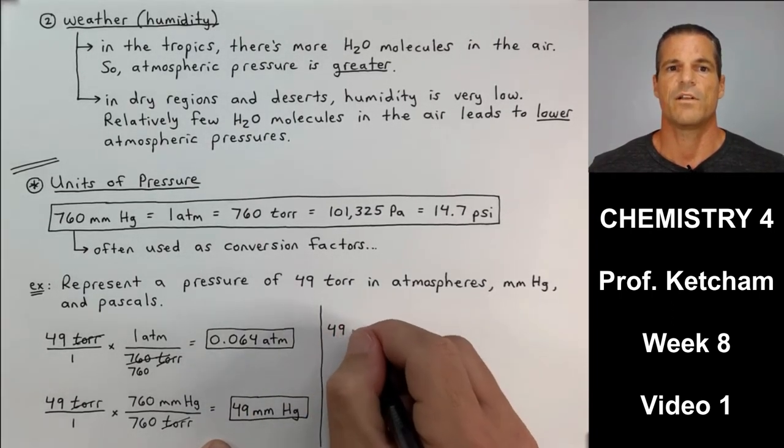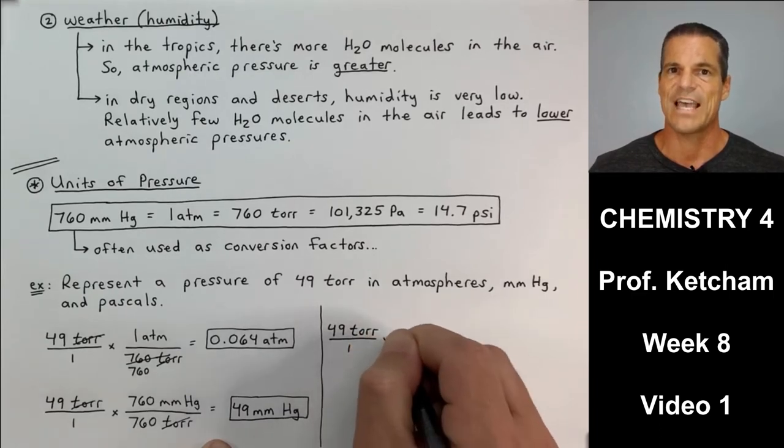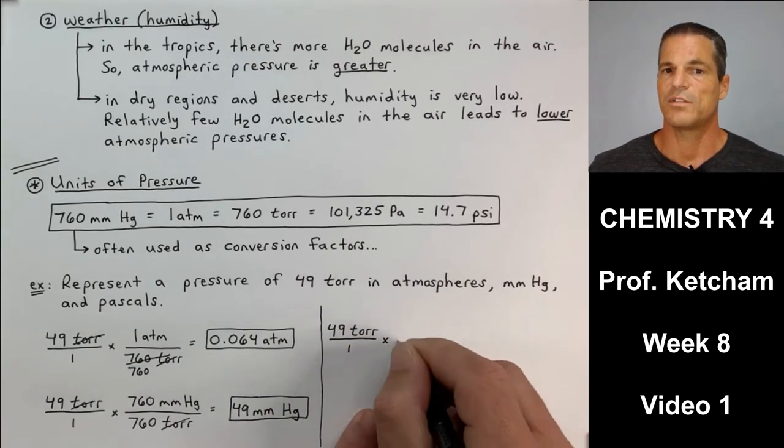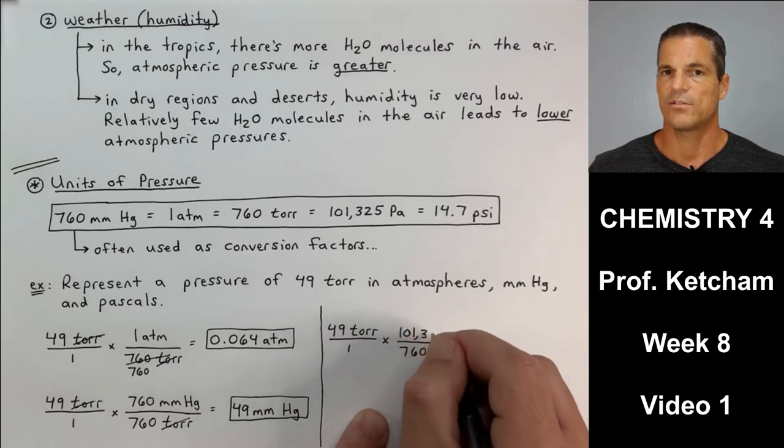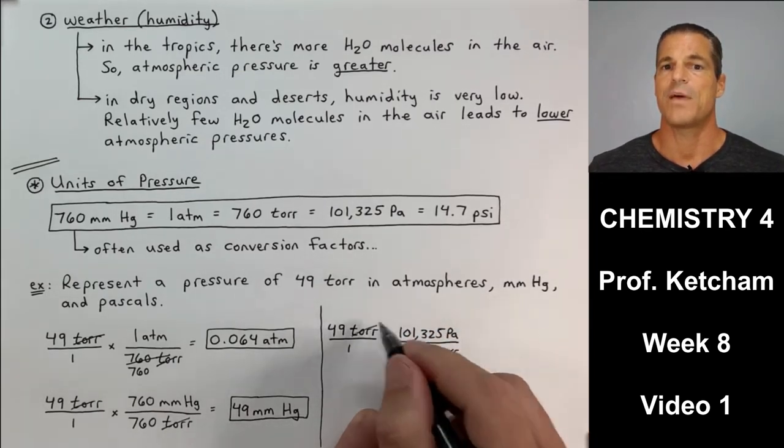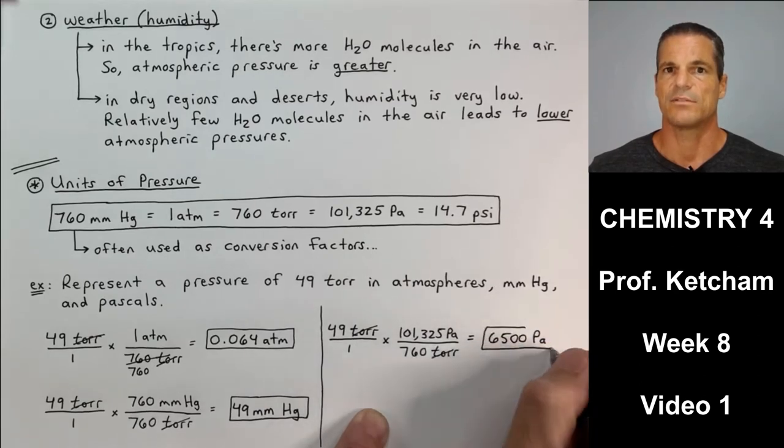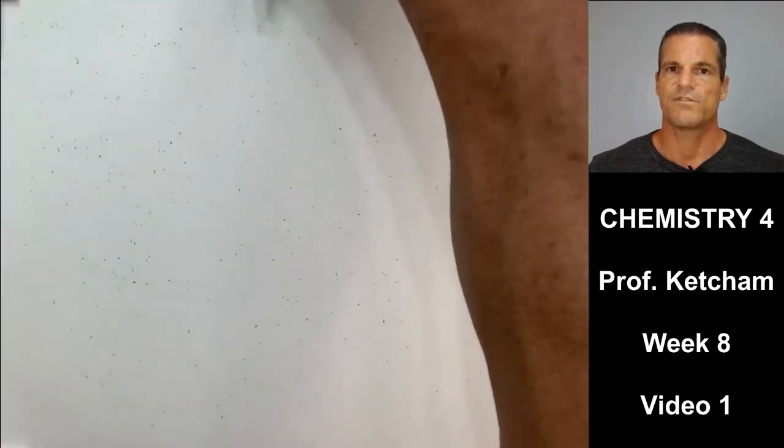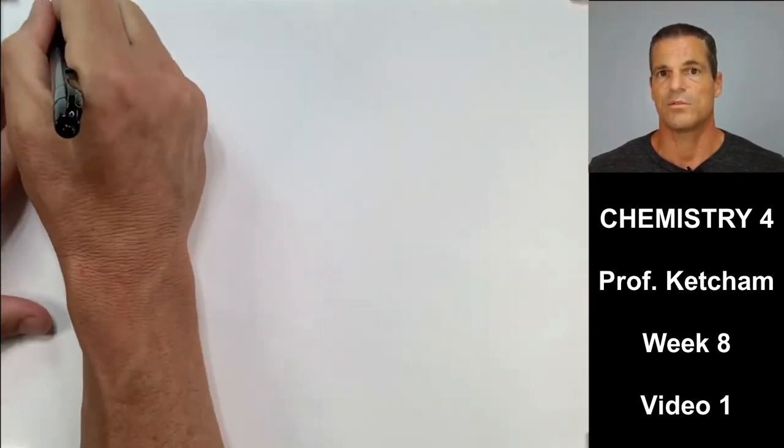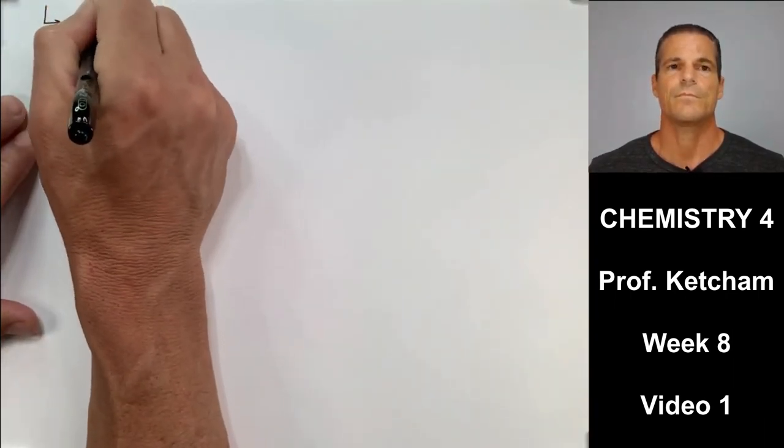The last one, converting 49 torr into pascals. Well, for every 760 torr, that cancels my torr, puts me into pascals, 6,500 pascals. So I started with two sigs in each of those cases, and my answer was in two sig figs.